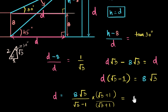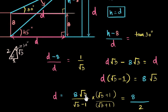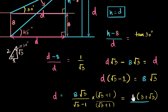Rationalizing the denominator — we don't like square roots in the denominator. Treat root 3 minus 1 as a minus b, and multiply numerator and denominator by (root 3 plus 1). This gives a squared minus b squared in the denominator, eliminating the square roots. So d equals 8·root 3·(root 3 + 1) over (root 3 minus 1)·(root 3 + 1). The denominator becomes 3 minus 1 = 2. The numerator: root 3 times (root 3 + 1) = 3 + root 3, so we have 8·(3 + root 3) over 2 = 4·(3 + root 3).